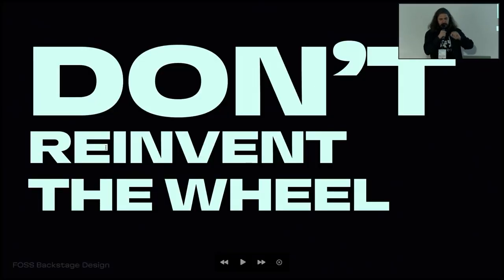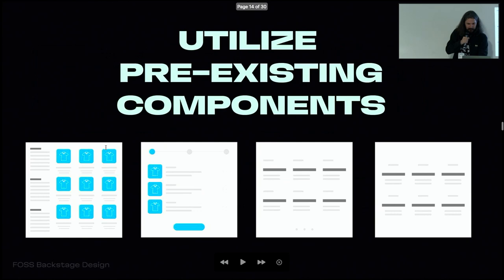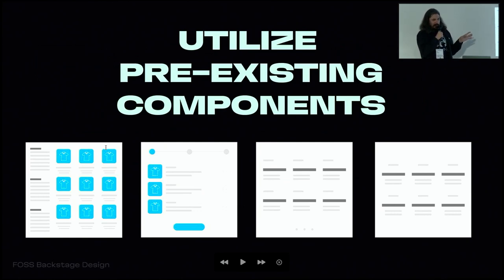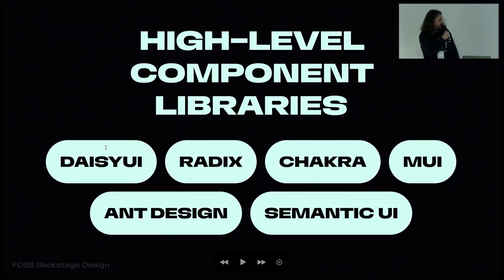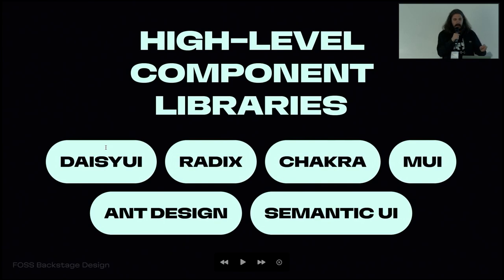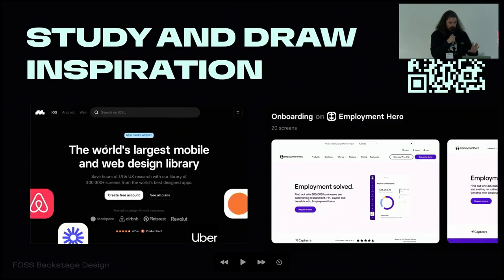Don't reinvent the wheel. Try to utilize pre-existing components — if you already have a card component, table component, or list component, reuse them. Choosing high-level component libraries can help you. Here is the framework we recommend, but for your case it can be something different. The main metric: it needs to be scalable and help you build layouts as fast as possible. Use high-level component libraries. And remember — we are building the product directly in the code, thinking about users, maintaining a user-centric mindset, and we have a library with many elements.